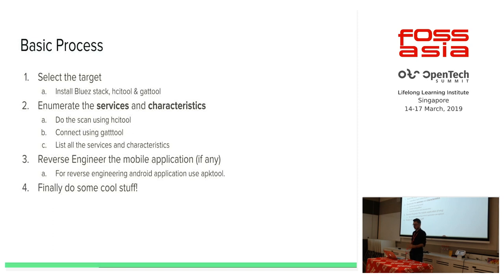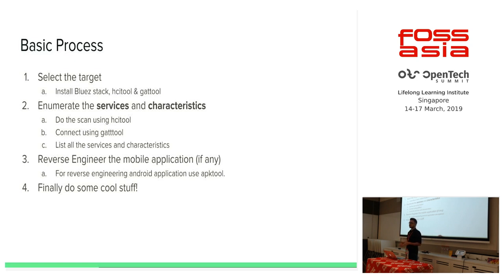Let's look at the basic process of exploiting a BLE device. The very first step is gathering information about the device — nothing beats the hardware manufacturer's manual or specification. There are a few key tools you don't want to miss: BlueZ stack, HCI tool, and GATT tool. These are what anyone uses when working with BLE. The next step is enumerating services and characteristics, using tools like HCI tool or your mobile app. After that, reverse-engineer the mobile application if one exists — a lot of information can be gathered this way, as many smart device manufacturers forget to harden the reverse engineering process.